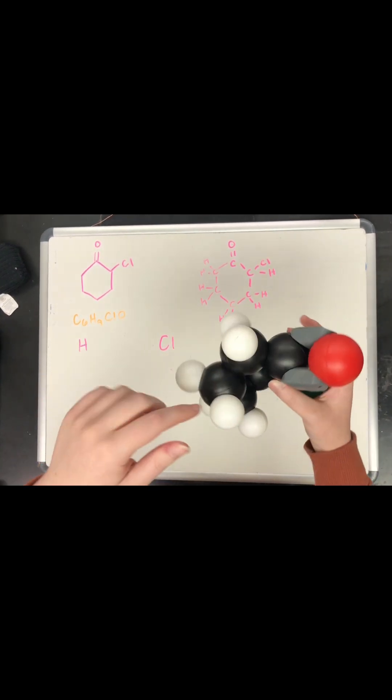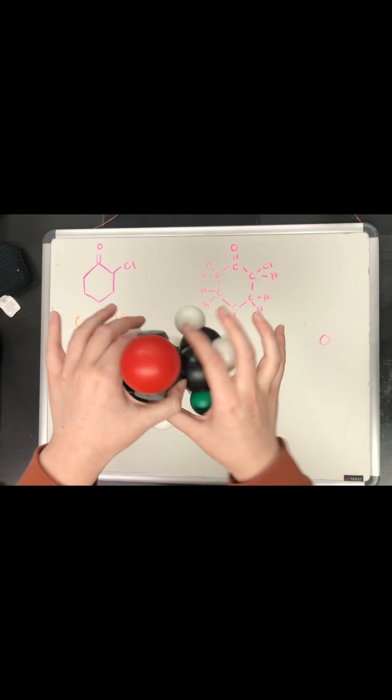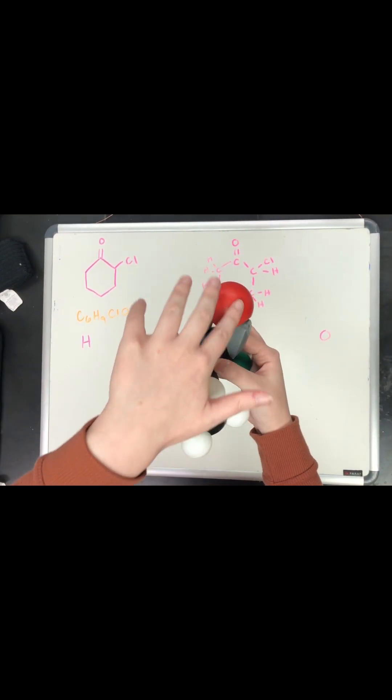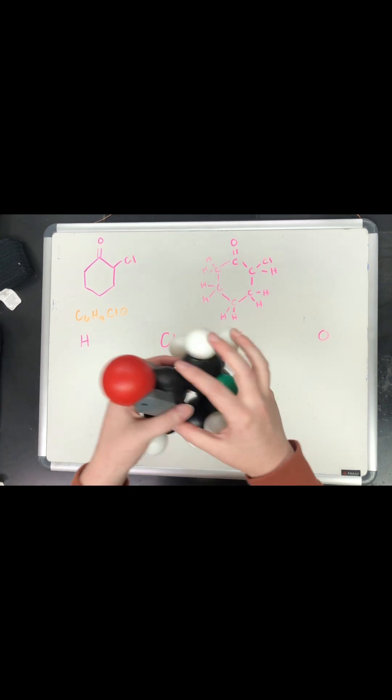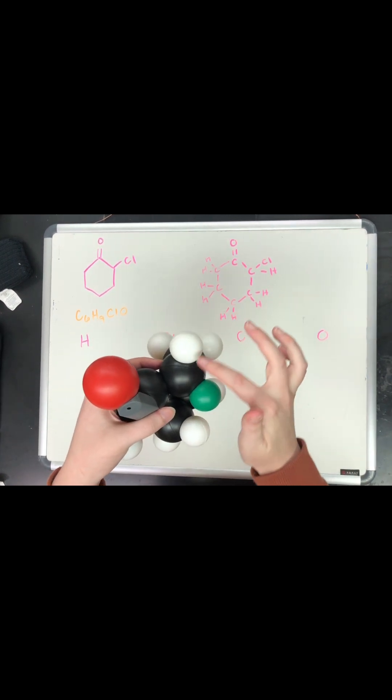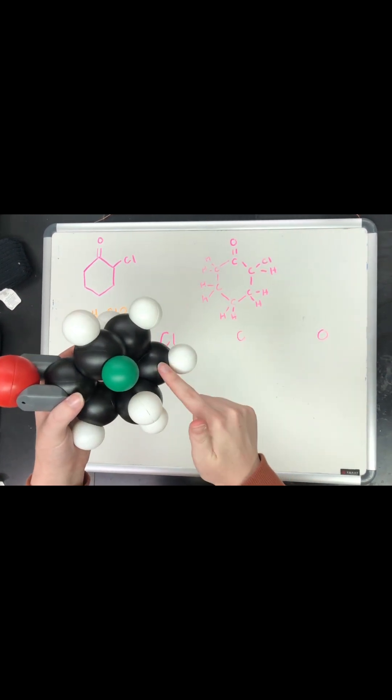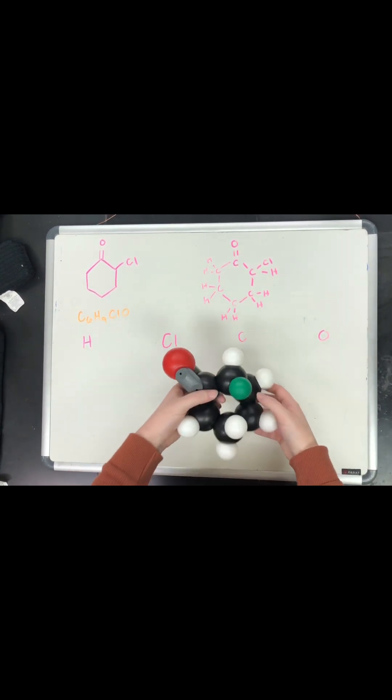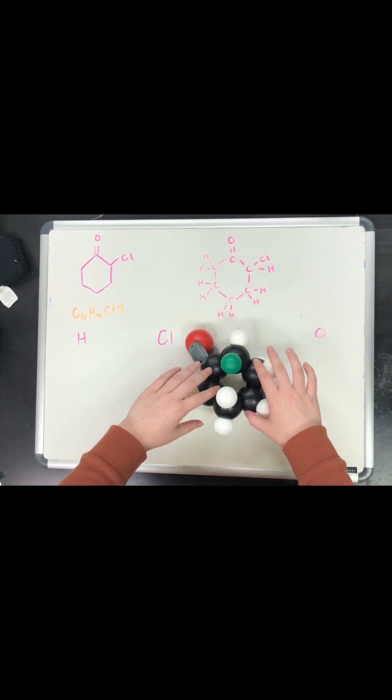And on this carbon over here, so two of the bonds are fulfilled by the carbon, and the other two are fulfilled by the double bond with the oxygen. Each hydrogen only has one thing it's bonded to, and the chlorine is only bonded to one thing as well. So here is our structure.